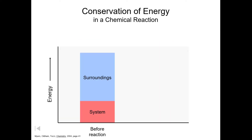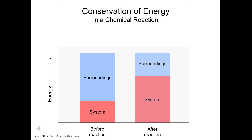Likewise, if we look at conservation of energy in a chemical reaction — if we have a chemical system, that would be our reaction itself, it holds a certain amount of energy. And in the surroundings around that reaction, there is also a certain amount of energy. Once we complete the reaction, we might have more energy in the system than it started with, but that energy came from the surroundings. The total energy does not change.